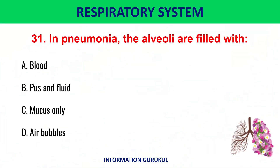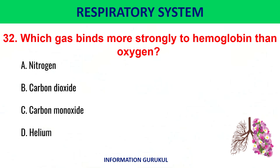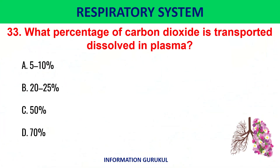In pneumonia, the alveoli are filled with pus and fluid. Which gas binds more strongly to hemoglobin than oxygen? Carbon monoxide. What percentage of carbon dioxide is transported dissolved in plasma? 5–10%.